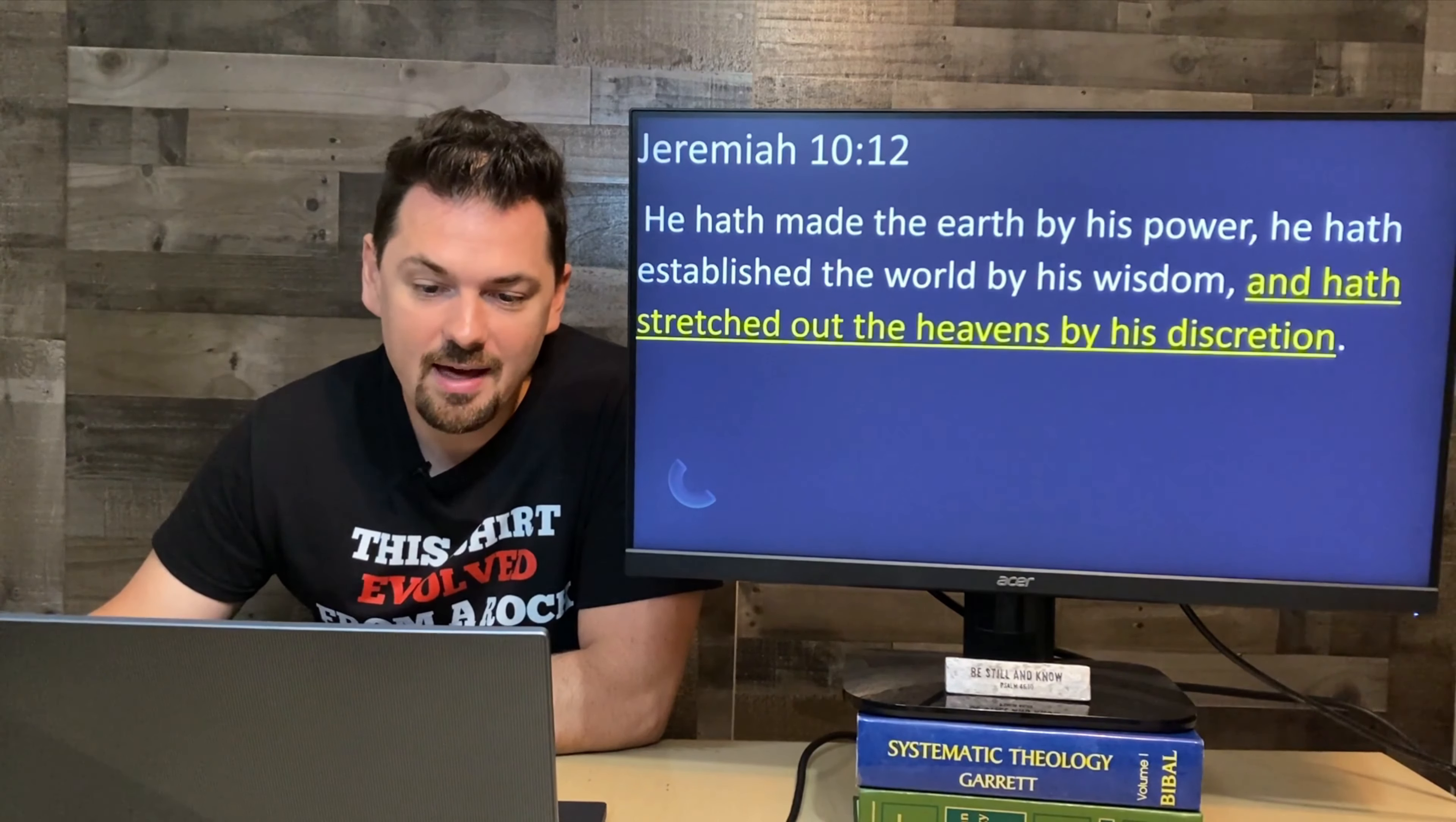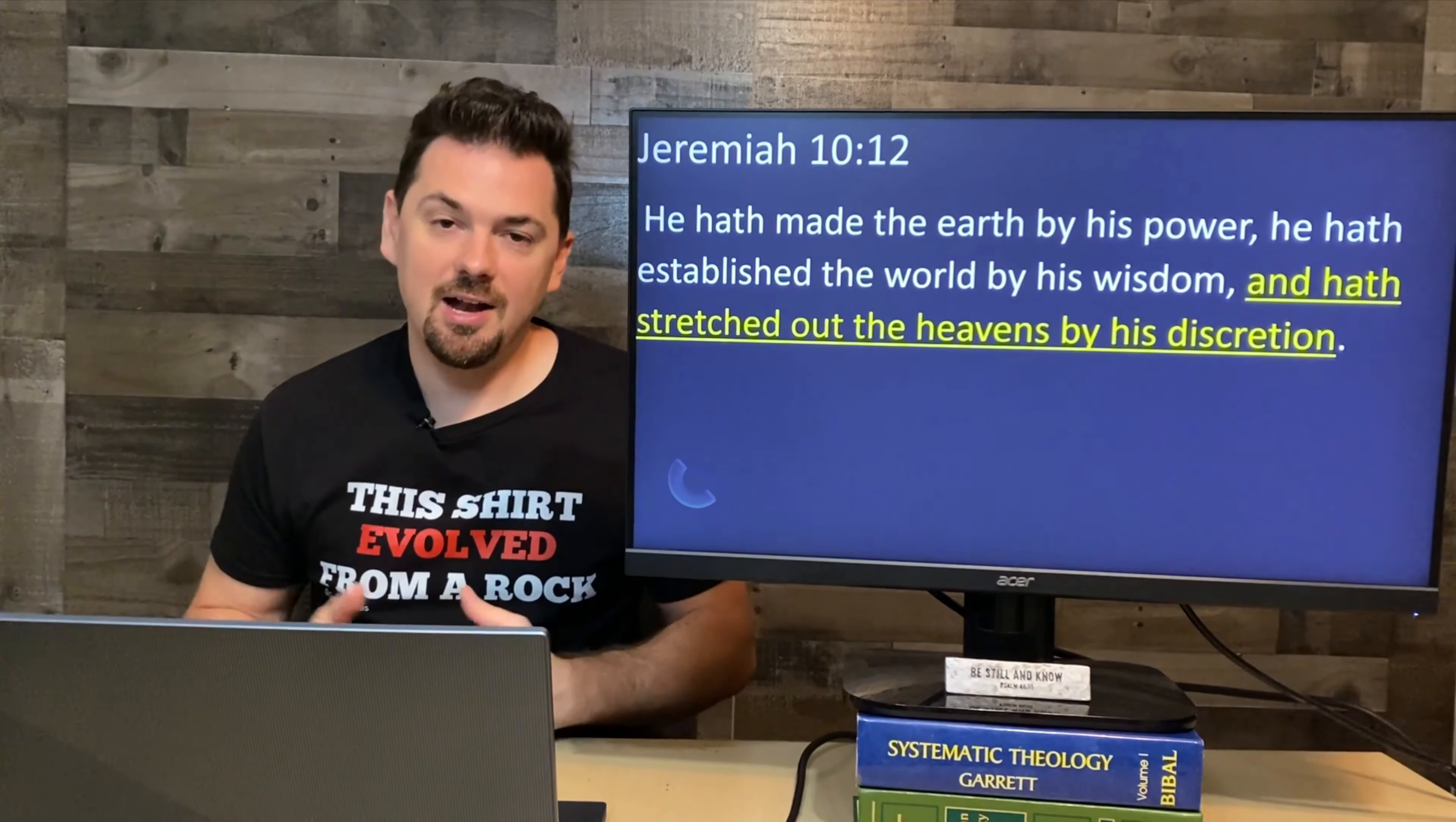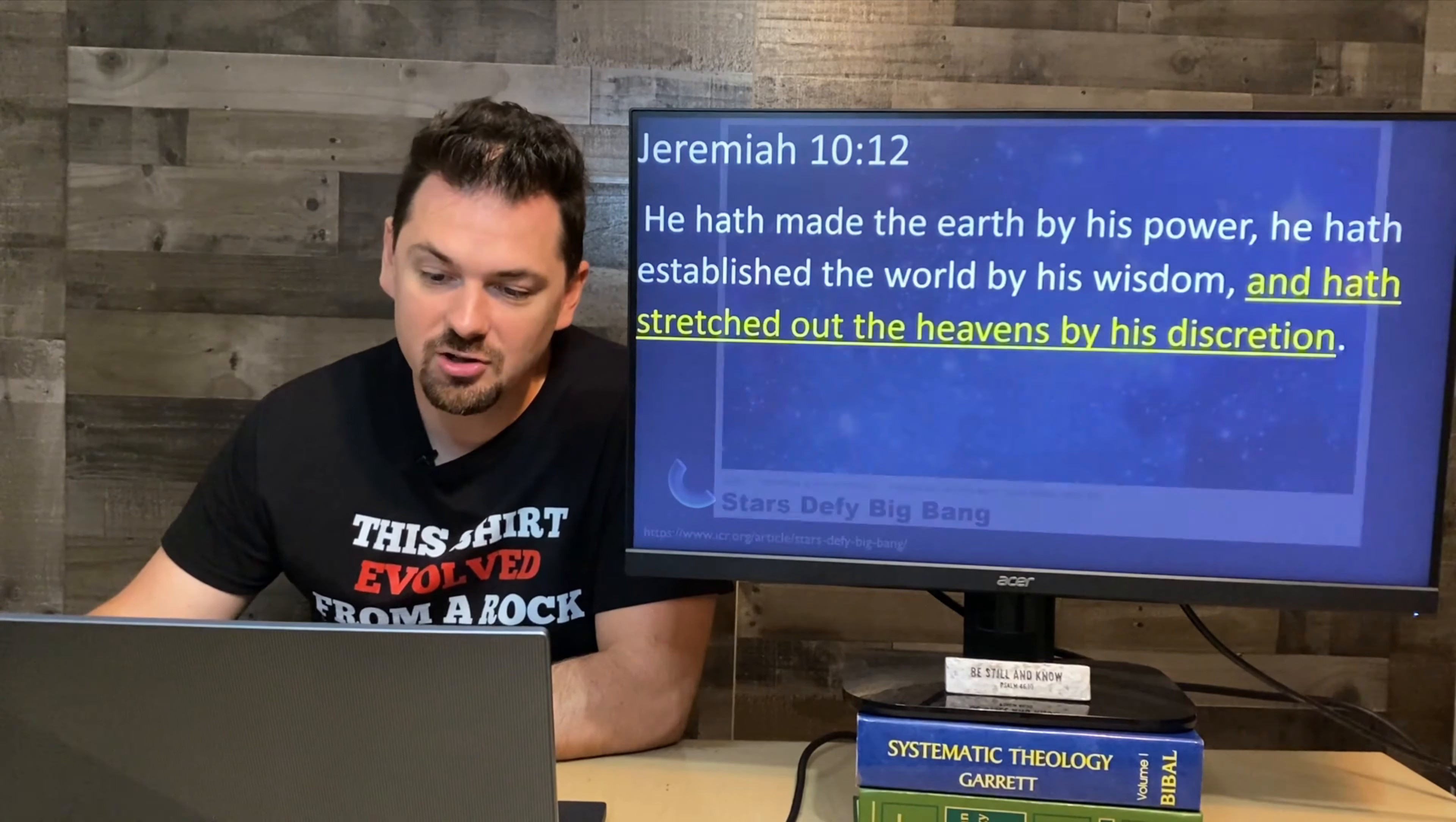Jeremiah 10:12 says, he hath made the earth by his power. He hath established the world by his wisdom, and hath stretched out the heavens by his discretion. So all throughout the Bible, God created the heavens and the earth, and he stretched them out with his hands. That's what he did. So let's jump into this article.